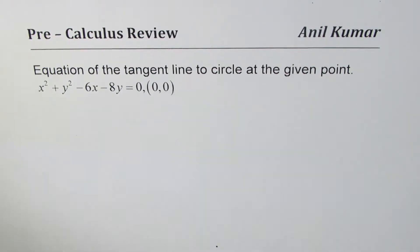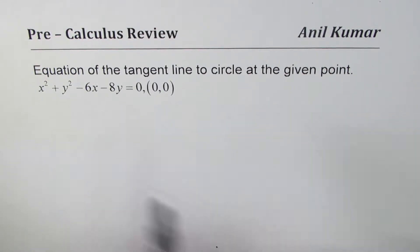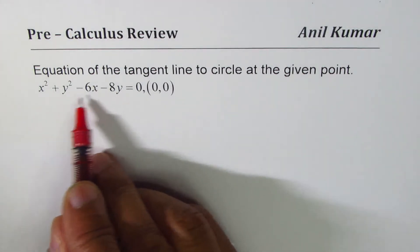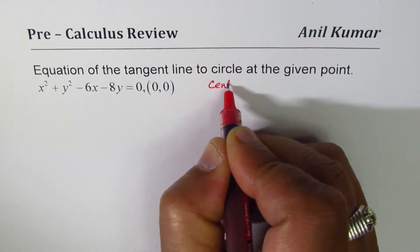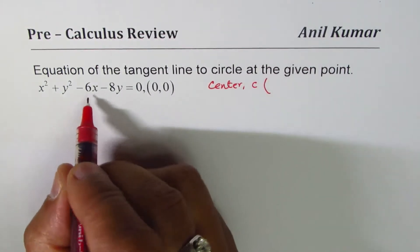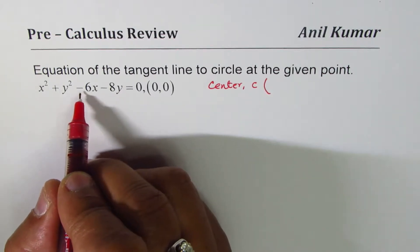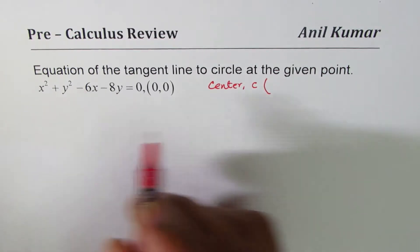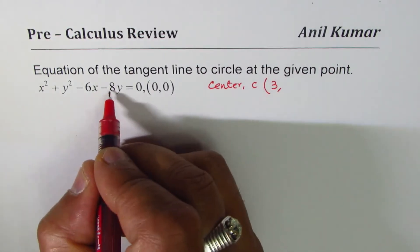Now first step is to find the center of the circle. Some of you who understand this formula fairly well could say that the center will be at negative half of this value's x coefficient, so negative means it becomes positive and half is 3. Negative half of y value coefficient is 4.